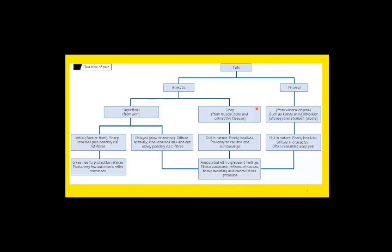Summary of pain sensations: somatic pain arises from the body — either superficial pain from the skin or deep pain from muscles, joints, and bones. Superficial pain can be fast or slow. Deep pain and visceral pain are typically dull in nature and poorly localized. Visceral pain arises from internal organs like the stomach, gallbladder, intestine, and kidneys.